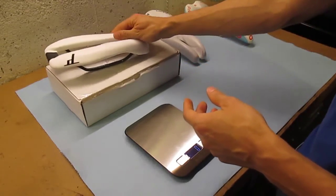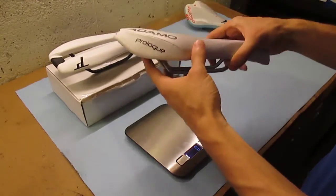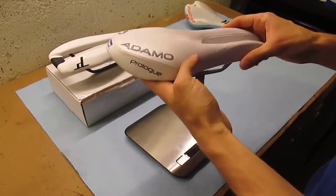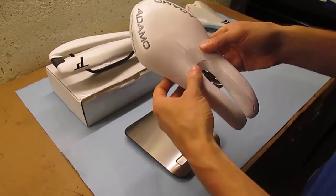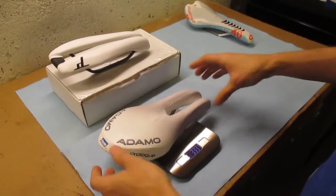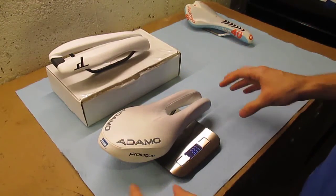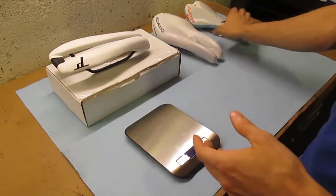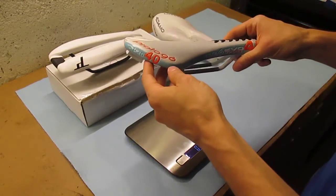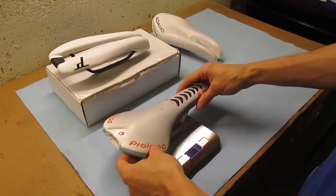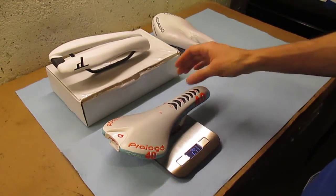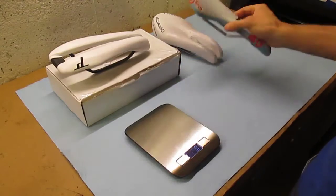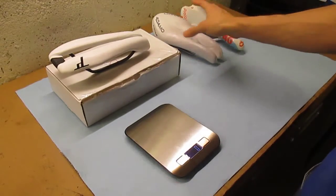Now, just so we can compare, this Adamo Prologue, which has been my favorite saddle for probably three years now, it comes in at 337 grams. And this Prologo Nago saddle, which looks awesome but isn't very comfortable, comes in at 241 grams. So there's a huge weight difference between these.